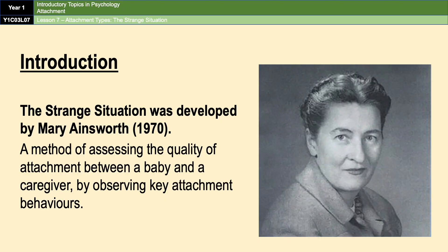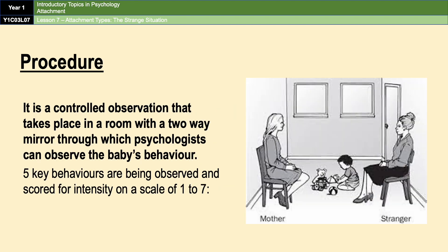The strange situation was developed by a student of John Bowlby's called Mary Ainsworth, as a method of assessing the quality of attachment between a baby and a caregiver by observing key attachment behaviors occurring between the two of them. The procedure is a controlled observation that takes place in a room with a two-way mirror through which psychologists can observe the baby's behavior. Overall there are five behaviors that are observed, each scored for intensity on a scale of one to seven.